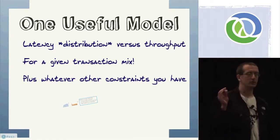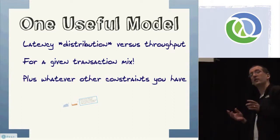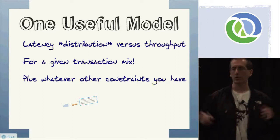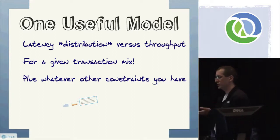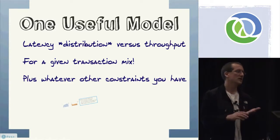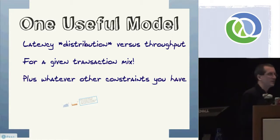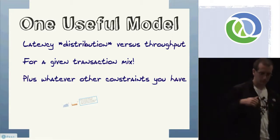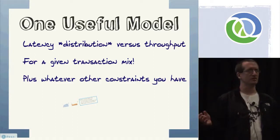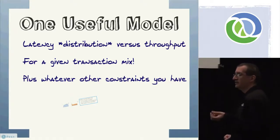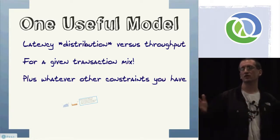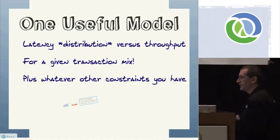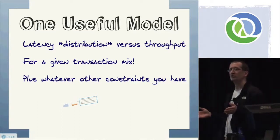For a given transaction mix — that's super important. It's really easy to walk up to a system and measure it doing one thing, maybe reads, and never throw writes in there. Your system has 17 pages and you just hit one of them. You want to be thinking about what is the distribution of response times across throughputs for a given transaction mix, plus whatever other constraints you have. We had a system where 99% of the responses had to come back in 10 milliseconds or less at a given load, and the responses had to be no older than five minutes — which controlled how we could do caching.